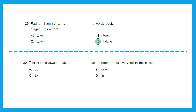Question 30: 'Tanya: Neena always makes dash false stories about everyone in the class.' The options are up, down, to, or in. The suitable preposition is 'up.' Option A — 'makes up' means to think up a story or plan.